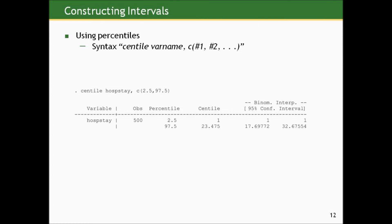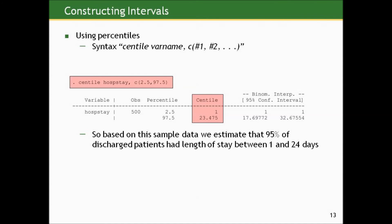So there's a command in Stata called centile. And the syntax is centile, and then you give the variable name. You put a comma, you put the letter C, and then in parentheses, you put the value of the percentiles you wish for it to display, as many as you like. So here I type centile, hospstay, comma C, and then in parentheses, 2.5 and 97.5. And what I get here is an interval 1 day to 23.47 days.